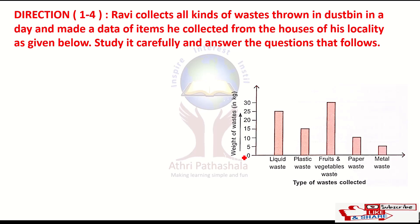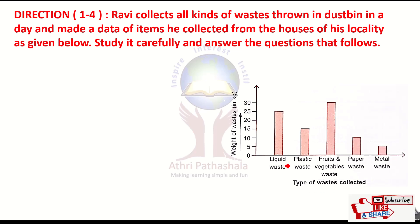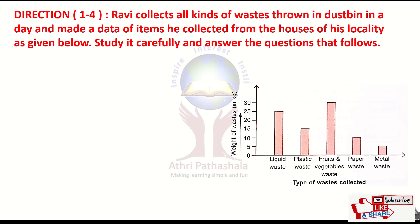This side refers to the weight of wastes — how many kilograms of waste he collected — and this side refers to the types of waste collected. He collected liquid waste, plastic waste, fruits and vegetable waste, paper waste, and metal waste. On the basis of this graph, we have to give answers for some questions.